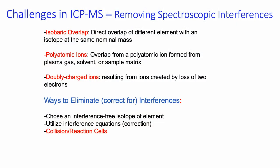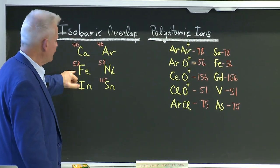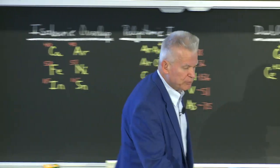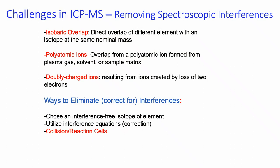Now let's talk about the challenges. It turns out that there are a lot of isotopes of different elements that have the same mass — they overlap. These are isobaric overlaps. Examples: calcium-40 and argon-40, iron-58 and nickel-58, indium-115 and tin-115. Isobaric overlaps are pretty easy to take care of because we can choose an interference-free isotope of the element — every element has at least one isotope that doesn't overlap. With ICP-MS, we key in on that isotope and measure just that isotope.